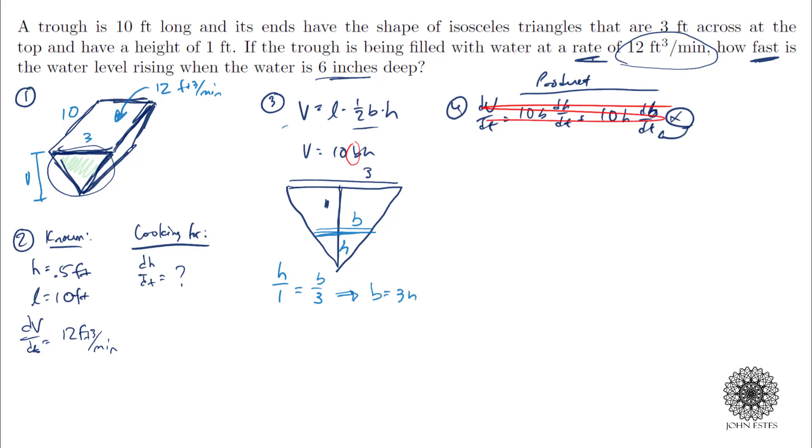Which in turn means that I can rewrite my volume formula as L, which is ten, times one half, three h times h. And so that would be five times three, right? Fifteen h squared. There's my V-h formula.